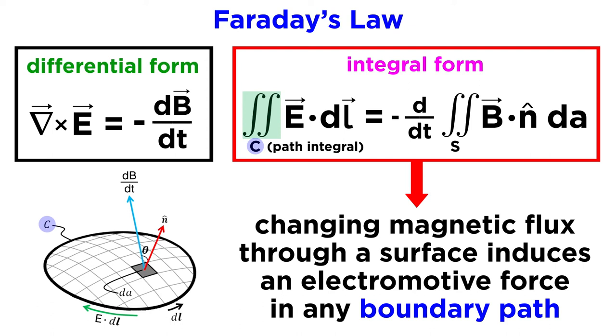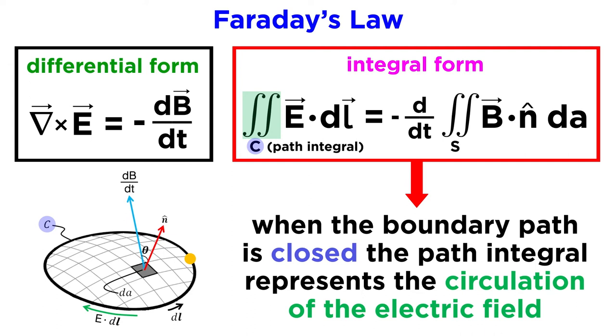The mathematical tool most often used to evaluate this situation for the electric field is the path integral, represented here by this double integral with the symbol c. As one might imagine, this integral is evaluated upon a specific path. The beginning and end points might be the same, but the integral will differ depending on the path taken between the two points.